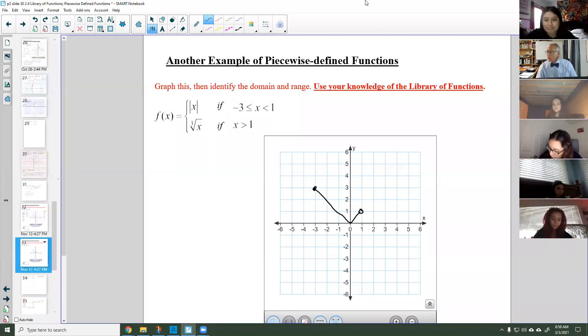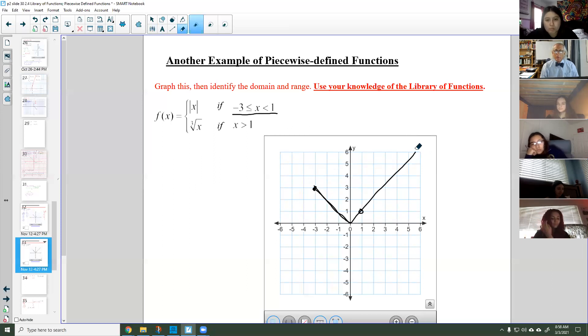So I graphed the first piece, the absolute value of x. I made the entire V graph of the absolute value and then I looked at my domain and it said it's only between negative three and one. So I got my eraser and I erased everything that was less than negative three and everything that was greater than one. So I'm only between negative three and one. Since negative three is less than or equal to x and x is just less than one, that made it so that I had a closed circle at negative three and an open circle at x equals one.